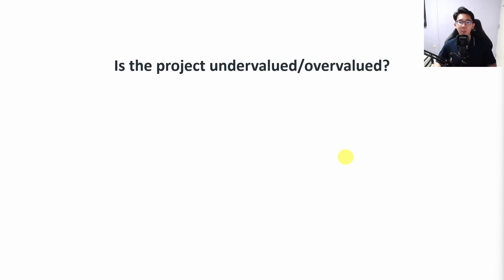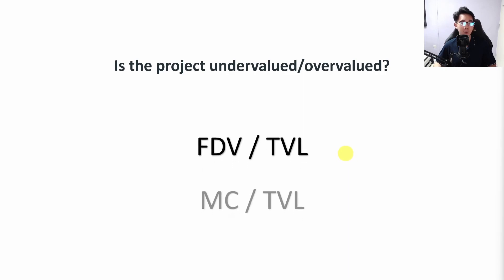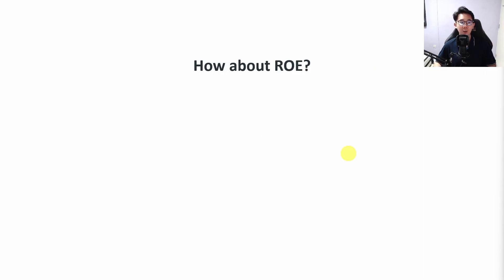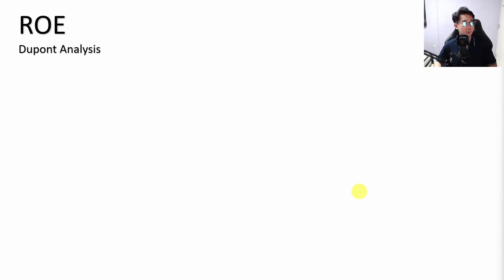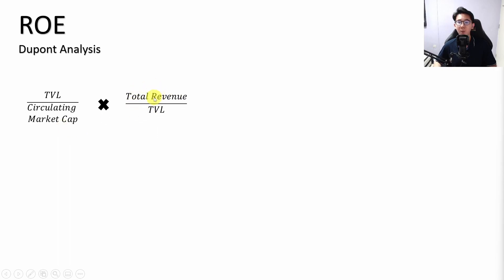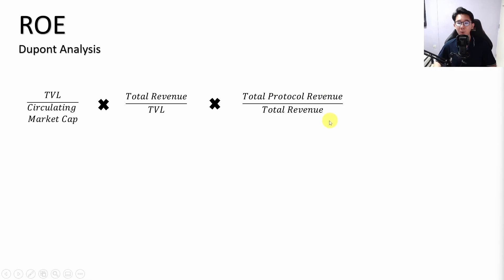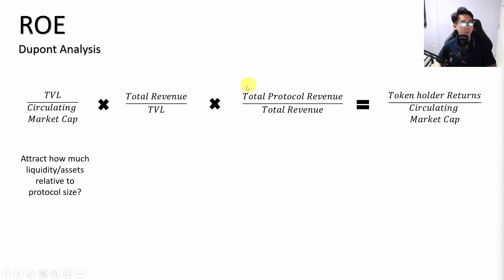Typically when evaluating whether a project is undervalued or overvalued, people look at FDV over TVL or market cap over TVL — the equivalent of the price-to-book ratio in TradFi. But can we calculate ROE (return on equity) in crypto? Using the DuPont analysis from TradFi — net profit margin times return on assets times financial leverage — we can translate these TradFi concepts into crypto. TVL over circulating market cap becomes assets divided by equity, and total revenue over TVL becomes sales divided by assets (ROA), giving us net return on equity for token holders.